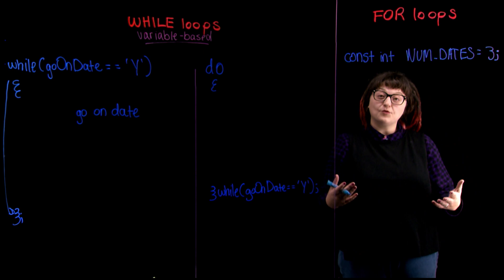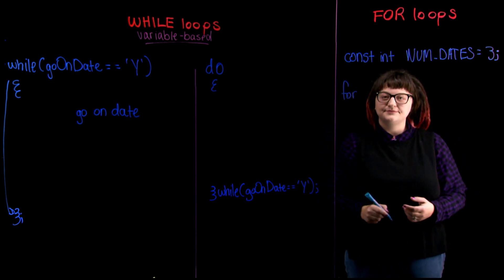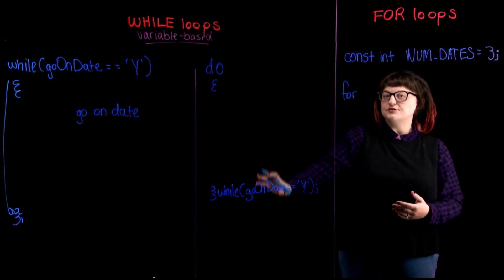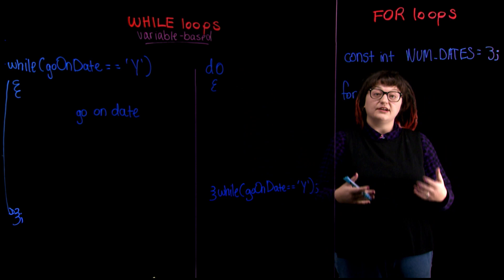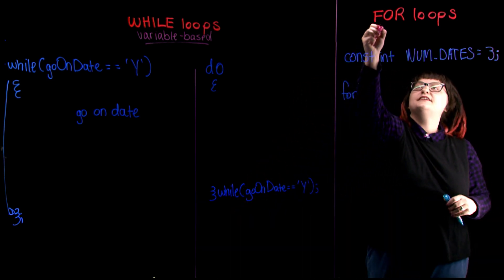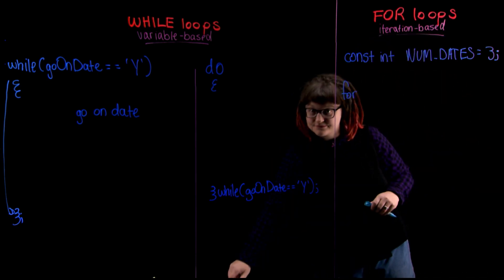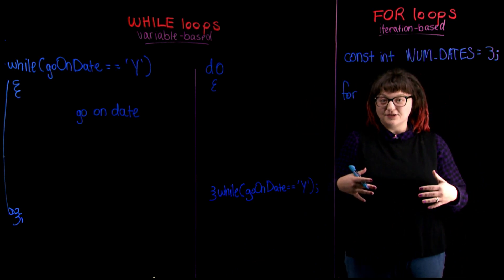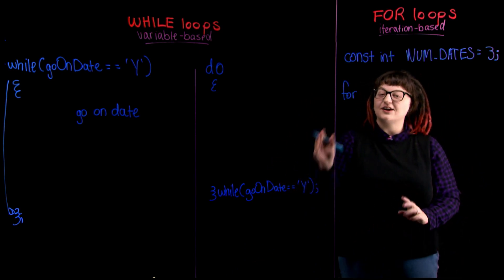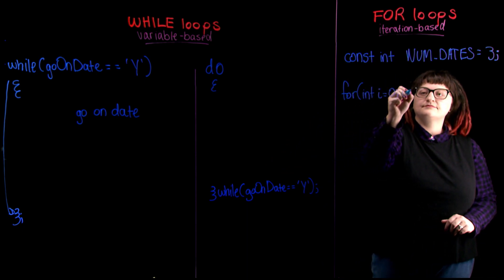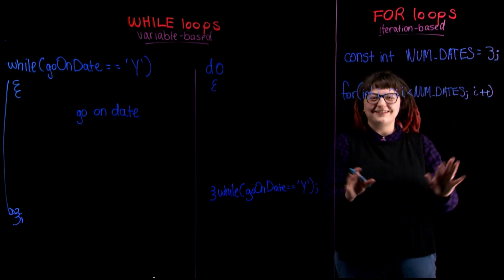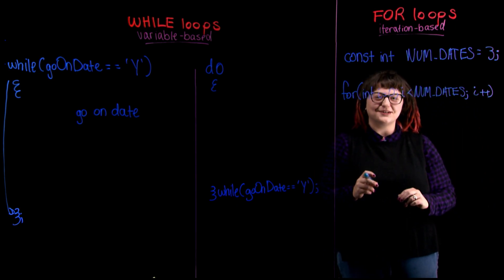Just like the three-date rule, the final loop that we're going to learn is also based on running a certain number of times. This type of loop is known as a for loop. Since it's a loop, a for loop also continues to run as long as a condition remains true. But unlike our while loops that use variables for their conditions, a for loop is iteration-based. And what are iterations? The number of times that a loop runs.